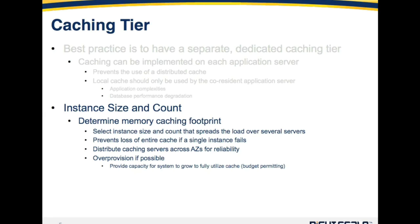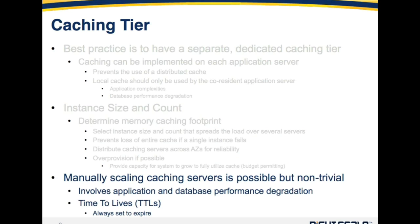We also recommend you over-provision if possible. For example, suppose you determined your memory caching footprint and thought that four M1 Larges would suffice for your caching tier — well, maybe fire up six, seven, or even eight. That gives you some room to grow and prevents scrambling to add caching servers at a later date. Manually scaling caching servers is possible but it's a non-trivial process. It generally involves an application restart so that the application servers are aware of the new servers within the pool, and also database performance degradation.